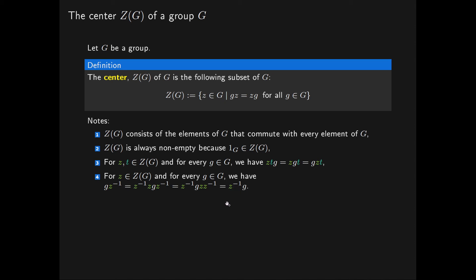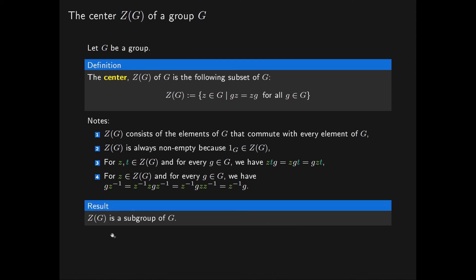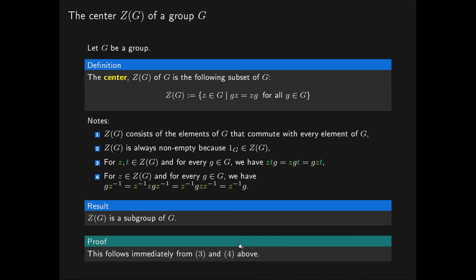What we've shown is that for any element in the centre of a group, its inverse also belongs to the centre. So we've shown that the centre is a subgroup of G. This follows from the three criteria: the centre is non-empty because the identity element belongs to it; for any two elements in the centre their product is in the centre; and for any element in the centre its inverse is in the centre. So we've verified that the centre of a group G is a subgroup of G.